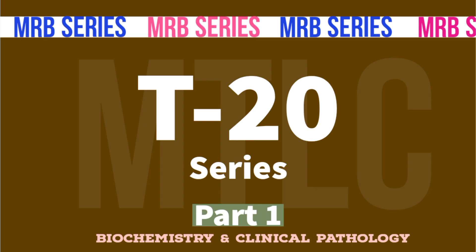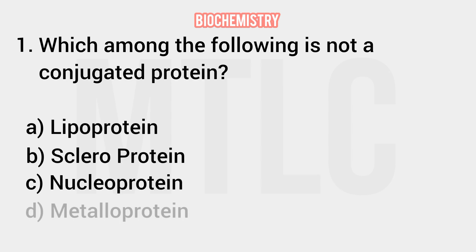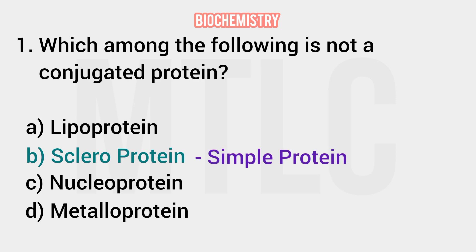First question: which among the following is not a conjugated protein? There are many types of protein: simple protein, complex protein, and conjugated protein. The options are lipoprotein, scleroprotein, nucleoprotein, and metalloprotein. Almost all are conjugated proteins. Scleroprotein is a simple protein, not a conjugated protein.